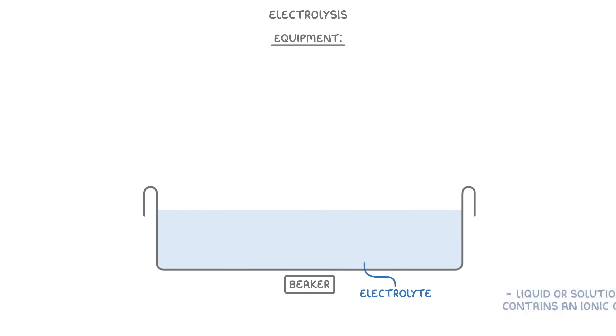Before we see how it works though, you need to be familiar with the equipment we use, as you could be asked to draw or label it in the exam. First up we need some kind of beaker, in which we place our electrolyte. An electrolyte is just a liquid or solution that contains an ionic compound, with the important point being that the ions in the electrolyte are free to move.